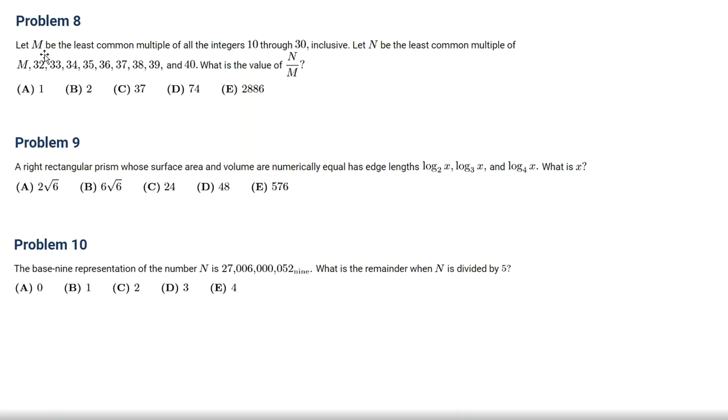Problem number 8. Let M be the least common multiple of all the integers 10 through 30 inclusive. Let N be the least common multiple of M, 32, 33, 34, 35, 36, 37, 38, 39, and 40. What's the value of N over M?